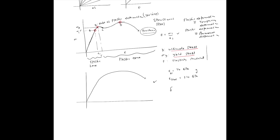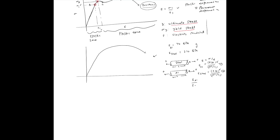If you take specimens of two different materials with the same geometry — same length L and same cross-sectional area — and apply the same tensile force F, one made of steel and one of aluminum, then E is defined as sigma over epsilon, where sigma equals F over A and epsilon equals delta-L over L. Setting up the equations for both cases, since the cross-sectional area and force are the same, the numerators are equal.